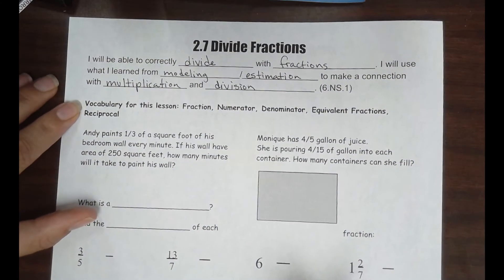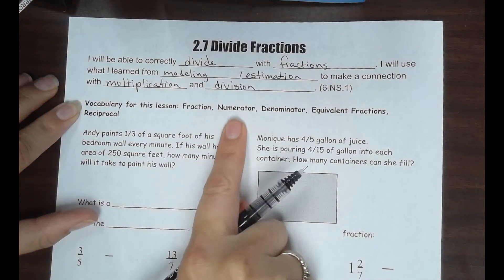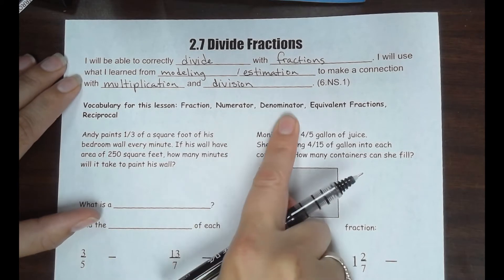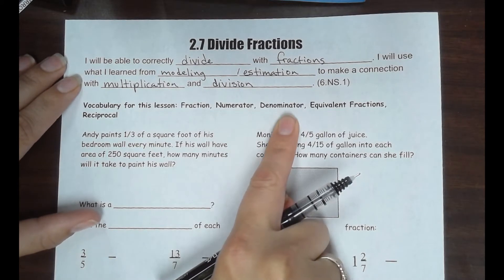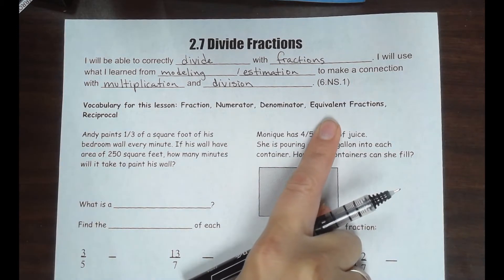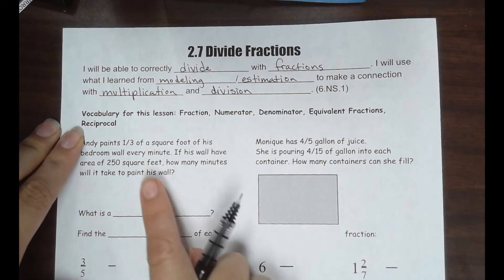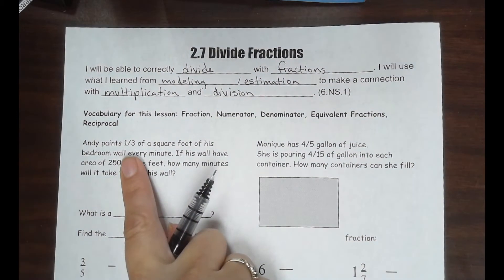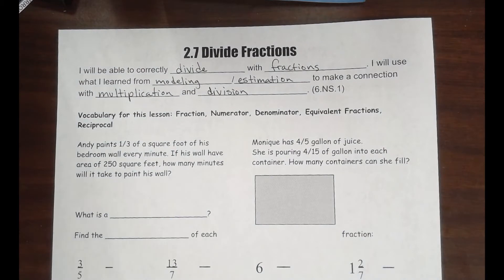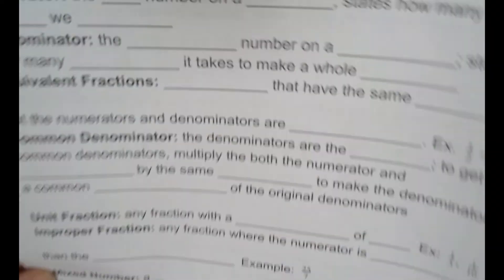Vocabulary for this lesson: Fraction — we know what that is by now. Numerator is the top number on a fraction. Denominator is the bottom number on a fraction. And equivalent fractions — those are fractions that are equivalent to each other, or equal in value. And reciprocal is a new one. Go ahead and pull out our vocabulary sheet and go back to page 27, chapter 2 vocabulary.